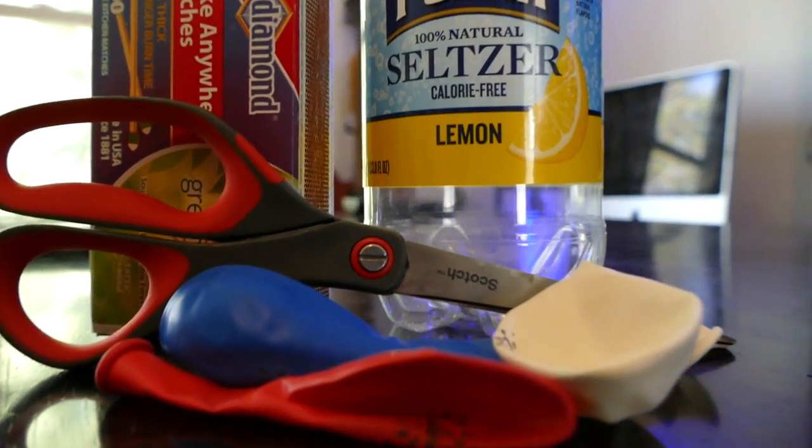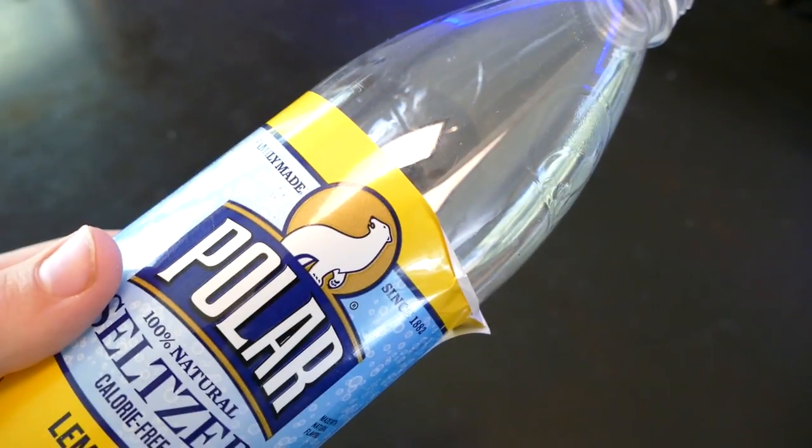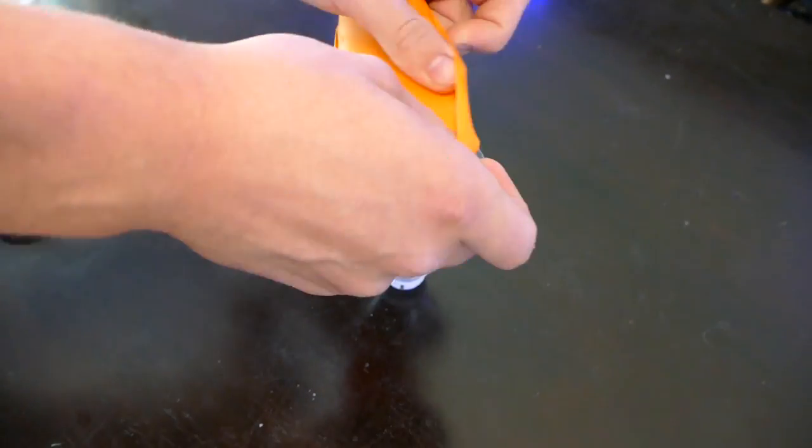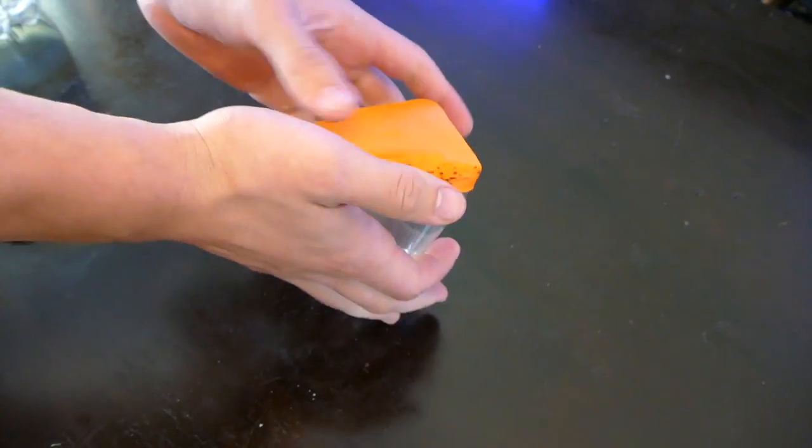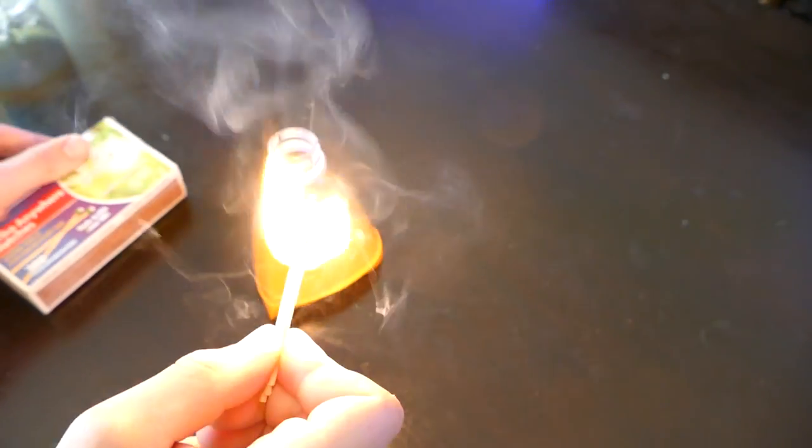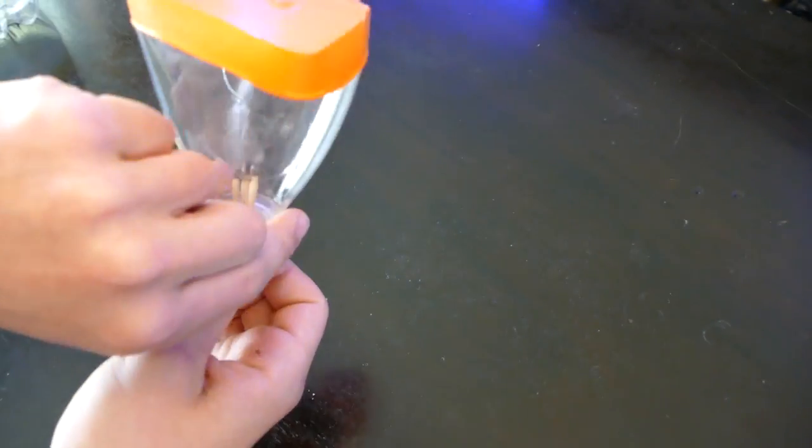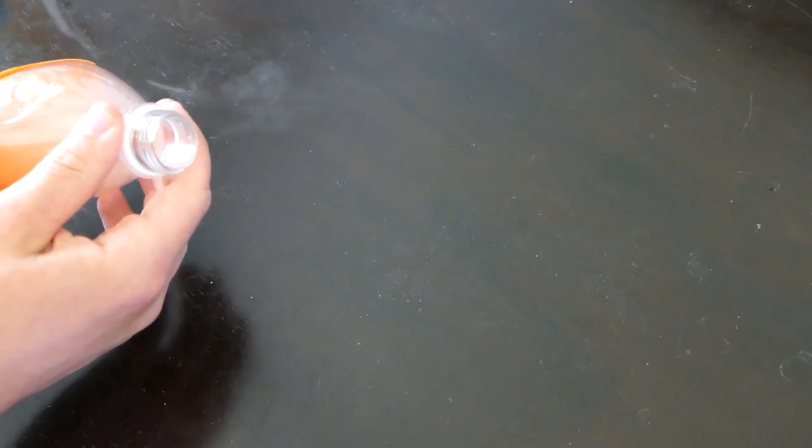Now here's how to make some cool smoke rings. First grab an old soda bottle. Then cut off one end and stretch the balloon across the opening. Now grab some matches or incense and light them up. Then blow them out. Now stick the smoking end into the bottle. Now when we tap the balloon we get some cool smoke rings.